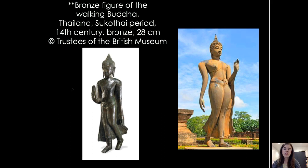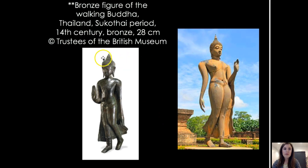The bronze Walking Buddha is relatively small at 28 centimeters, although much larger representations of this type exist. It becomes a very particular type in Thailand — this Buddha who walks amongst us and is more connected to our earthly presence. You can see the distinct flame-like ushnisha, and you start to identify some unique features in Southeast Asian Buddhism versus what we've seen in India or in East Asia in China, Korea, and Japan, including heavy ornamentation as we also saw with the Apsaras at Angkor Wat.